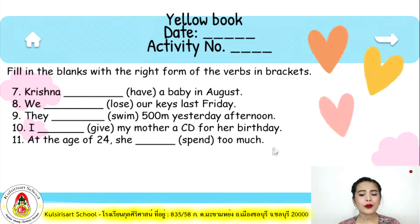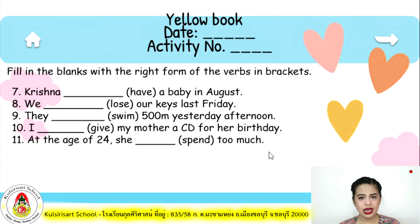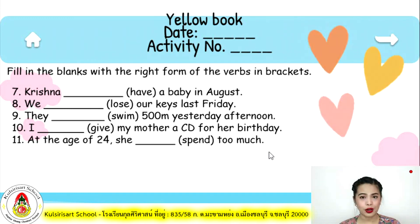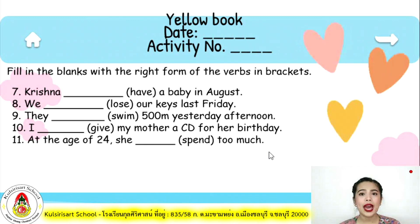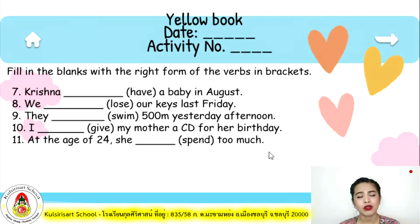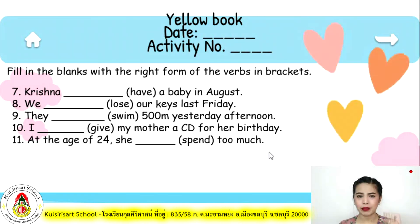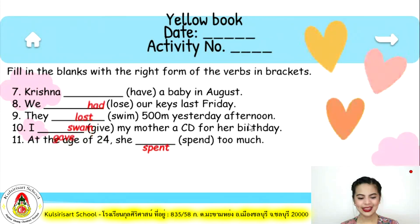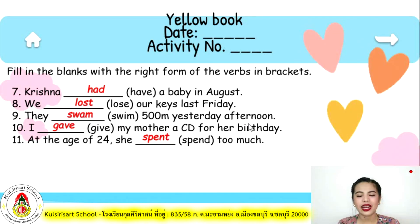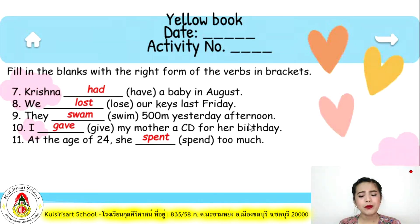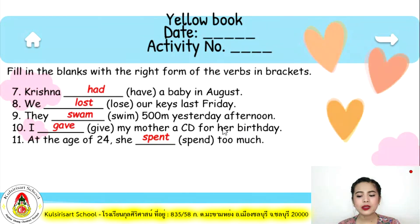Number seven: Krishna have/had a baby in August. We lose/lost our keys last Friday. They swim/swam 500 meters yesterday afternoon. I give/gave my mother a CD for her birthday. At the age of 24, she spend/spent too much.